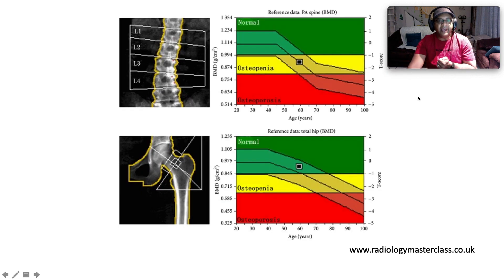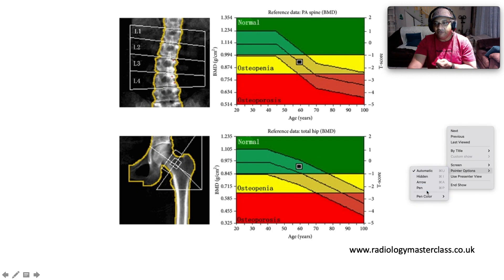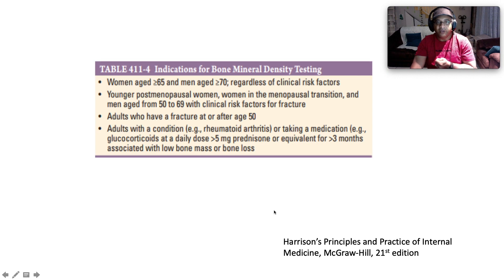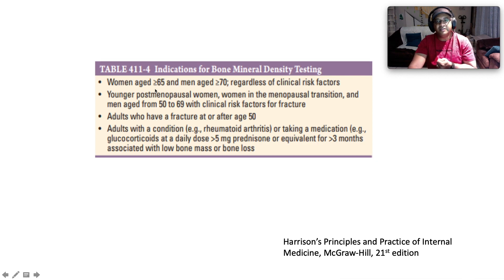We also look at bone mineral density from L2 to L4 on the PA spine view and at the neck of femur — same principle — to determine whether the result is in the normal, osteopenic, or osteoporotic range.